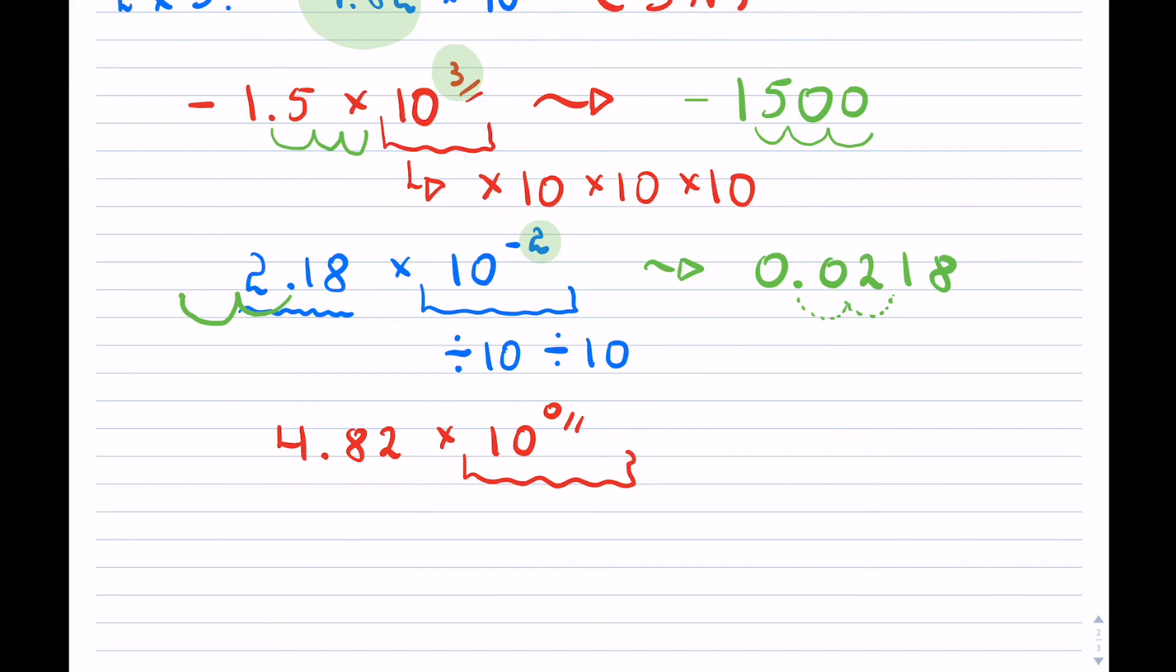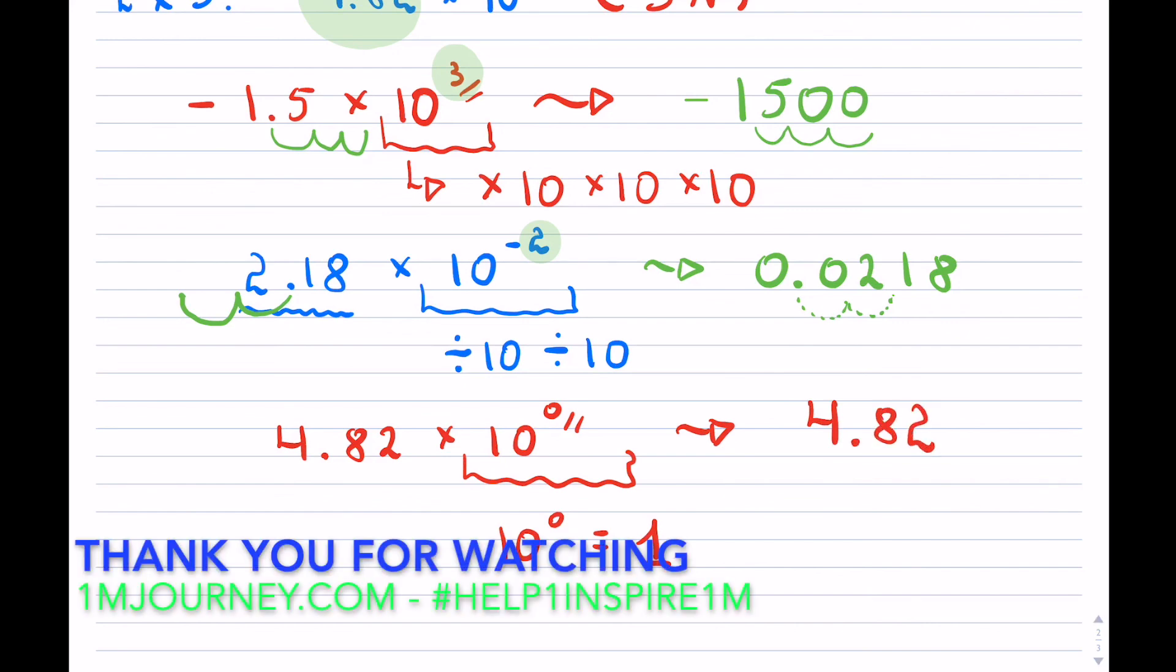And actually, so this, so 10 to the 0 means 1. So if you're not going to be dividing or multiplying, then the number simply just stays as it is, which is 4.82.